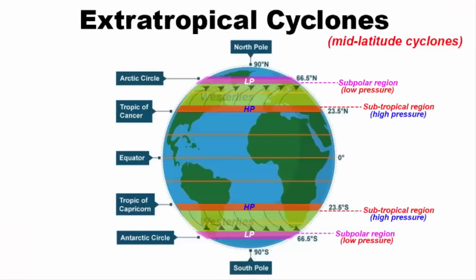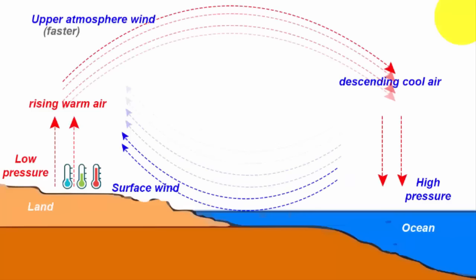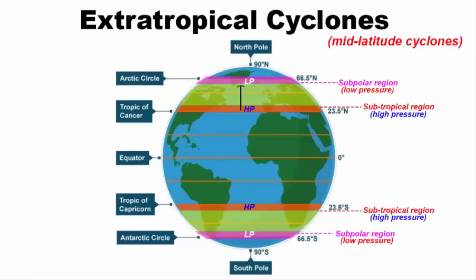We have already learned that the subtropical region is a high pressure belt. And then the subpolar region is a low pressure zone. We also know that air moves from high pressure areas to low pressure areas. That means there will be air movement from subtropical high to subpolar low at the surface level. Due to Coriolis effect, this wind gets deflected to the right and that's what lead to the prevailing westerly winds.